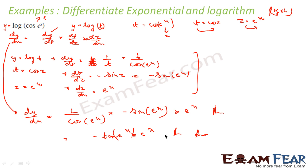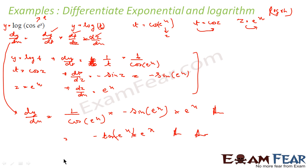So what have we done? We identified this as a composite function, wrote y equals log t, t equals cos z, and z equals e^x. Then we wrote dy/dx as dy/dt times dt/dz times dz/dx, found the value of all three, multiplied them, and got the answer.